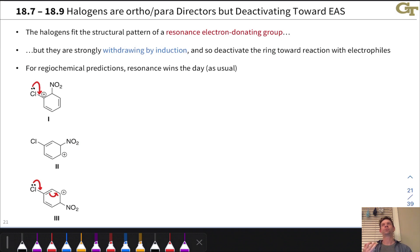This leaves us wondering, are they ortho-para directors or meta directors, and what effect do they have on the rate of substitution relative to benzene? Do they speed it up due to their donating effect or slow it down due to their withdrawing by induction effect?